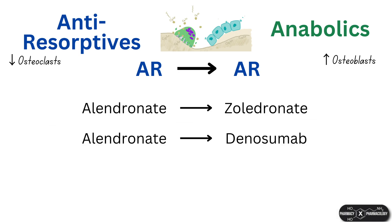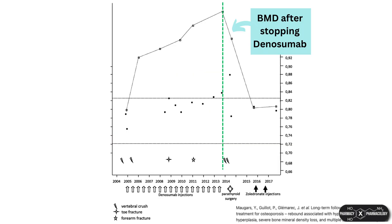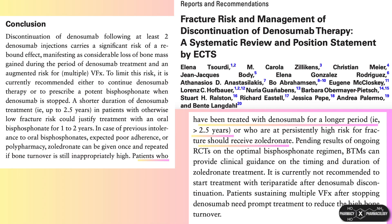How about denosumab to bisphosphonates? It was found that for short courses of denosumab of one to two years, alendronate is able to counter the hyperresorption caused by denosumab discontinuation and even maintain the BMD gains achieved with denosumab. However, for longer courses of denosumab the rebound effect is more profound, and alendronate will not be able to counteract the hyperresorption. Guidelines such as the European Calcified Tissue Society recommend transitioning to zoledronic acid—the more potent bisphosphonate—for longer courses of denosumab exceeding two years.